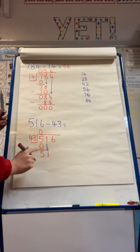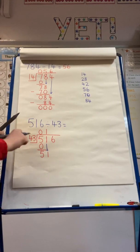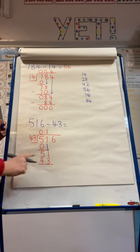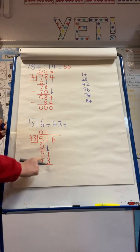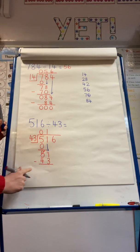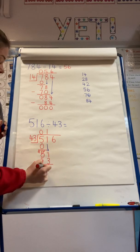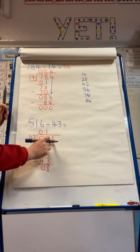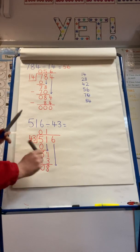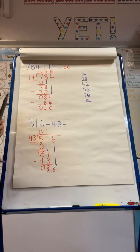I know that I can get 1 group of 43 into 51. I now need to subtract 43 from 51. I can't do 1 take away 3, so I need to go to my 10s column and take 1 from there — I'm now looking at 11 subtract 3 which is 8, and 4 subtract 4 which is 0. I now need to bring my 6 from the 1s column down to join my 8, so I'm now looking at how many groups of 43 I can get into 86.